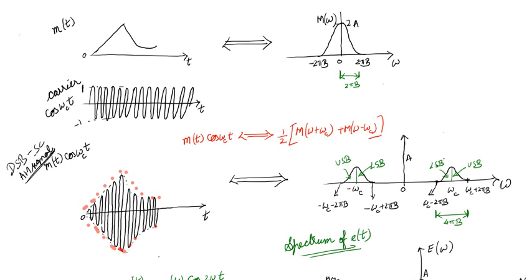We already know M(ω). So what is M(ω + ωc)? That is M(ω) advanced by ωc — so instead of being centered at the origin, this spectrum is shifted to −ωc. The amplitude was 2A, but since we have the 1/2 factor, the amplitude becomes A. The spectrum is advanced by ωc, moving to the left.